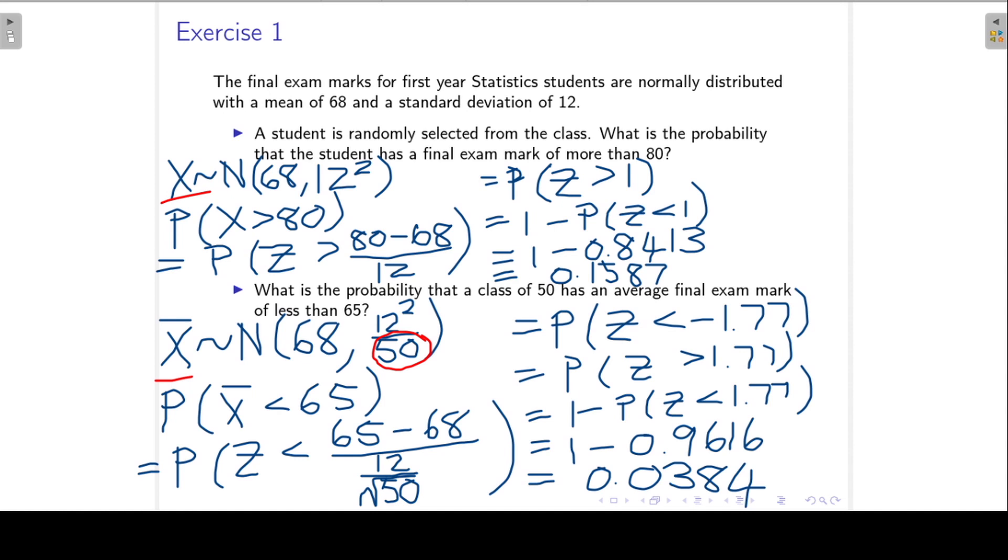When we standardize for X bar, we divide by the standard error of the sampling distribution for X bar, and that would be 12 over the square root of N. Another thing to note: here we are working with a single student X, and here with the mean of a class of 50. Make sure your notation is correct. For the first one it is X, and for the second one it is X bar.